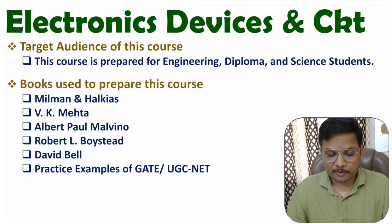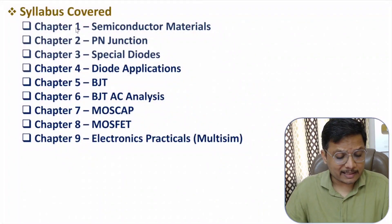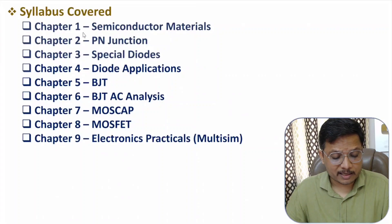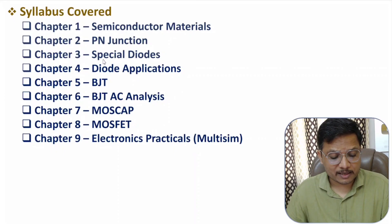Looking at the syllabus of this course, there are nine chapters in total. The first chapter is based on semiconductor materials. The second chapter is based on PN junction. The third chapter is based on special diodes. The fourth chapter is based on diode applications.